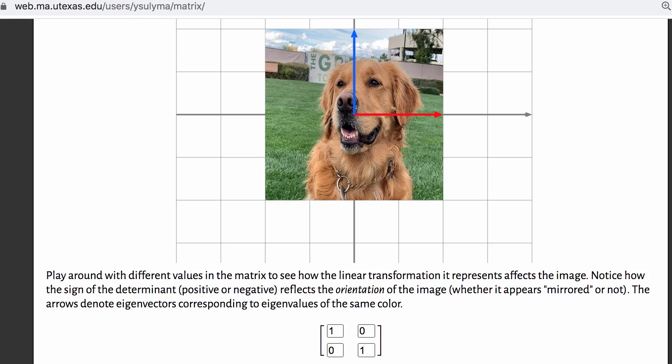In a previous video, I talked about how a two-by-two matrix can be used to define a transformation for the entire coordinate plane.